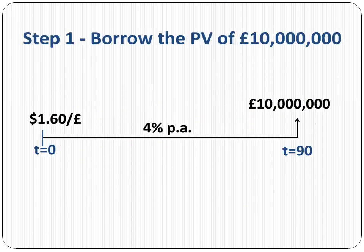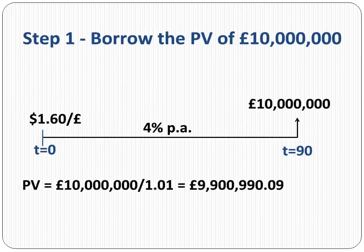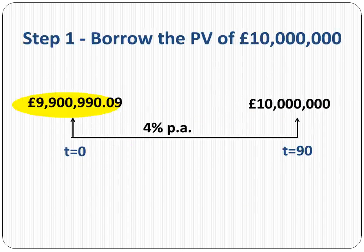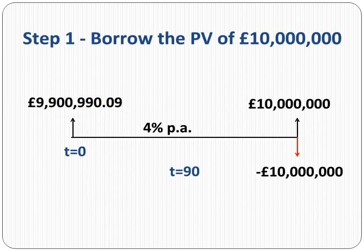So the exporter needs to borrow the present value of 10 million pounds and immediately convert it to dollars at the current spot rate. The total payment with interest in 90 days will be 10 million pounds. The present value of 10 million pounds, discounted at the British pound interest rate of 4% per annum, or 1% for three months, is 9,900,990 pounds.